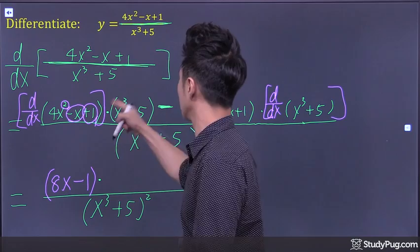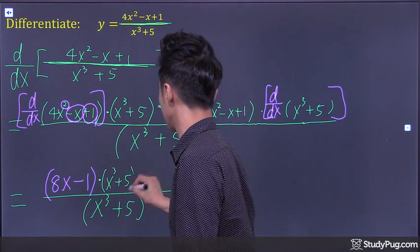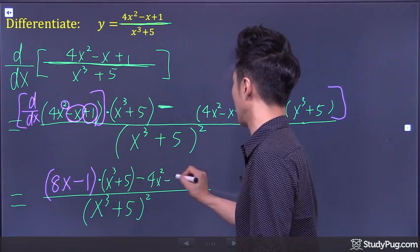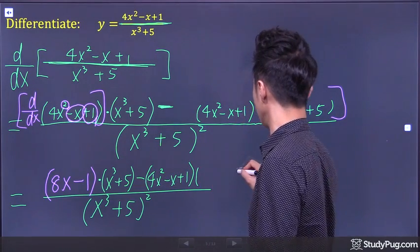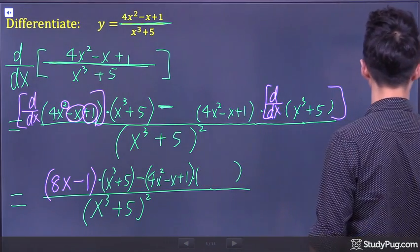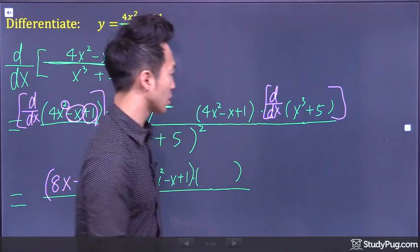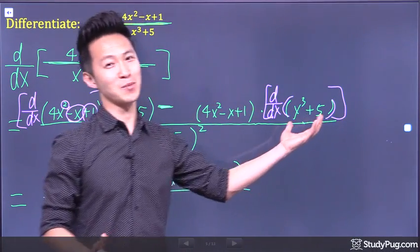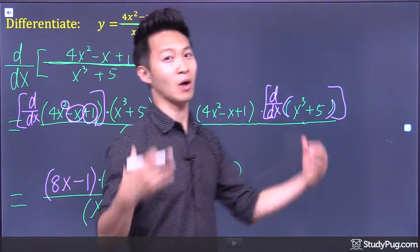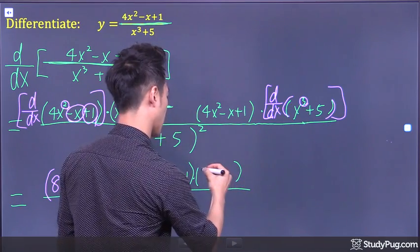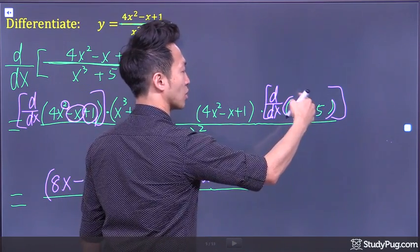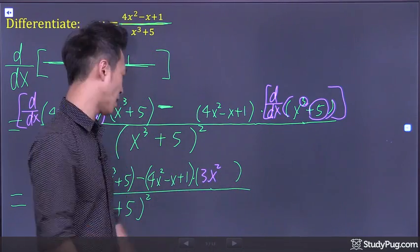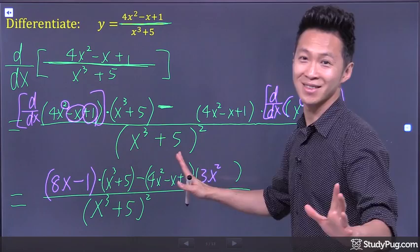Times x cubed plus 5. Minus — here we just copy down 4x squared minus x plus 1, since we don't have to do anything to it. Times — and here we take the derivative of x cubed plus 5. Apply the power rule: bring 3 to the front, giving 3x squared. Derivative of the constant 5 is 0, so we don't write it. And we're done — quotient rule complete.